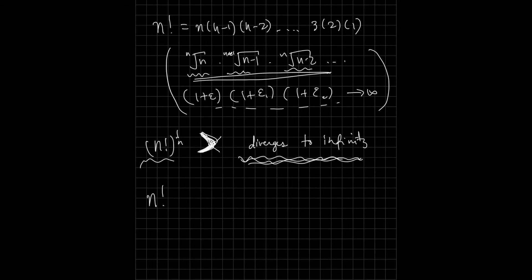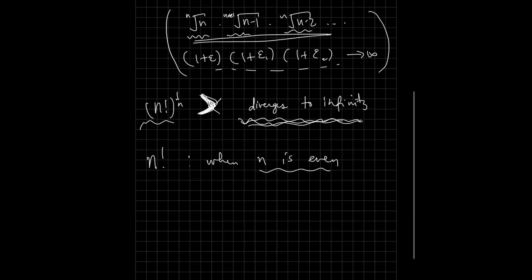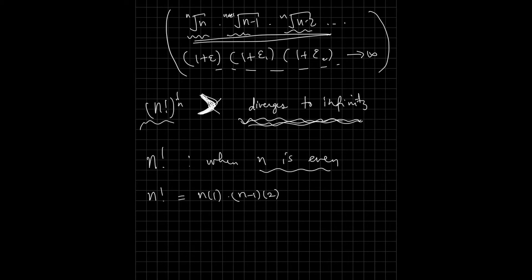Now let's go back to n factorial and break this into two cases. The first case is when n is even, meaning it's divisible by 2. We rewrite n factorial by pairing the first and last terms: n times 1, then n minus 1 times 2, then n minus 2 times 3, and so on. The last pair is n over 2 times n over 2.